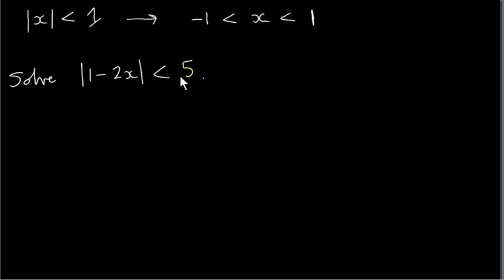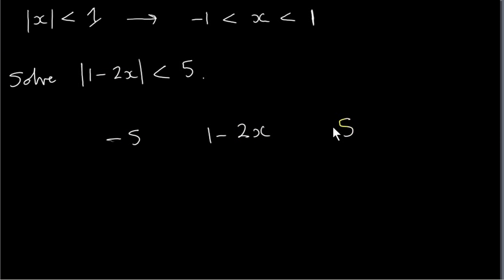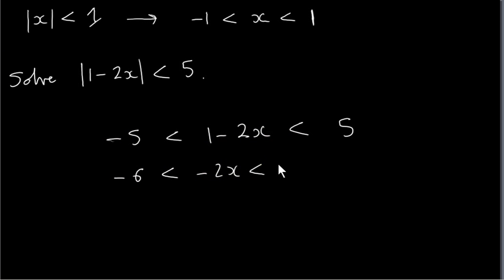Suppose we want to solve this inequality. We can follow the prescription for the modulus of x less than one — we just take the quantity one minus two x and stick it between minus five and plus five, in the same way that we stuck x between minus one and plus one. We solve for x, so we subtract one from everything: minus five minus one is minus six, less than minus two x, less than five minus one, which is four.